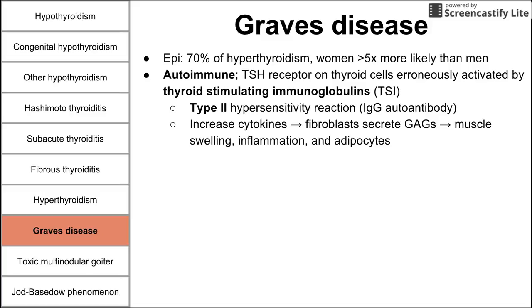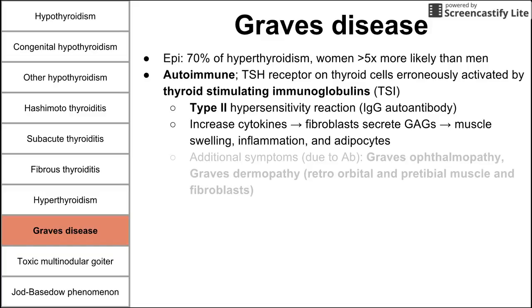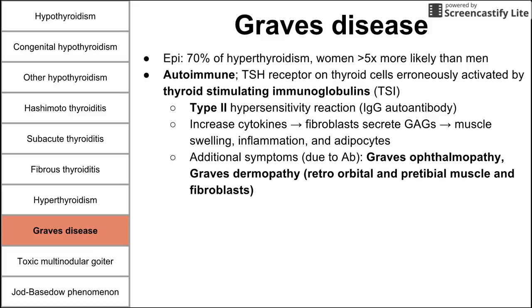There are increased cytokines in this inflammatory state. These cytokines stimulate fibroblasts to secrete GAGs, causing muscle swelling and inflammation and adipocyte activation. Unique to Graves' disease are Graves' ophthalmopathy and Graves' dermopathy: antibodies stimulating the TSH receptor also accumulate behind the eye and in the pre-tibial muscle, causing eyes to protrude and masses to form on the shins.